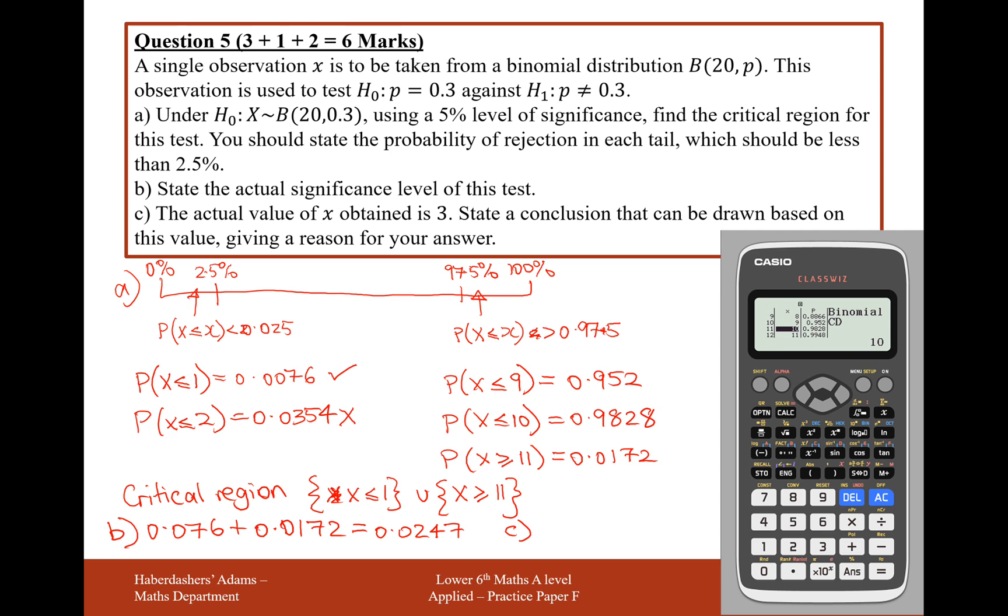Now we need to give a reason for your answer. The answer here they're looking for is there is insufficient evidence at the 5% level to suggest that the value of P is not 0.3. So effectively, we've got a double negative there. Insufficient evidence that the value of P is not 0.3. In layman speak, the answer here is we are happy with the probability of 0.3. We wouldn't be suspicious if we were to only get three heads out of 20 flips of a coin, but you can't phrase it like that in probability. Make sure you get the phrasing of that answer correct. Six marks for that question.